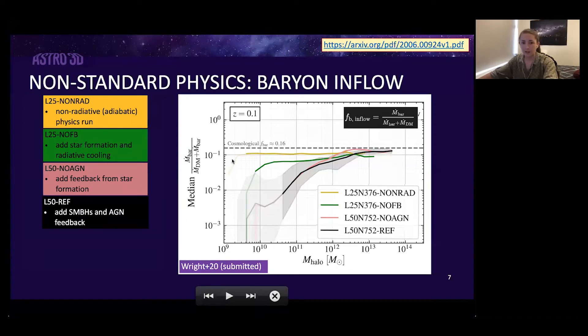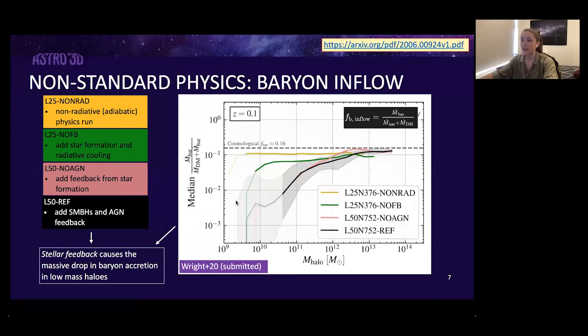The no AGN run in pink adds in feedback from star formation, and the reference run in black adds in AGN and the associated feedback. You can see that the non-radiative run and the no feedback run both hover around the universal baryon fraction, telling us that essentially baryons are accreting in a fairly similar manner to dark matter over the full halo mass range. But it's once you add in stellar feedback with the pink no AGN run that you see this massive drop in baryon inflow at low halo masses, which then of course remains when we add AGN on top. It's fairly obvious that the reduction in baryon accretion rates and the consequent baryon depletion of lower mass halos is driven by the implementation of stellar feedback, at least in EAGLE.